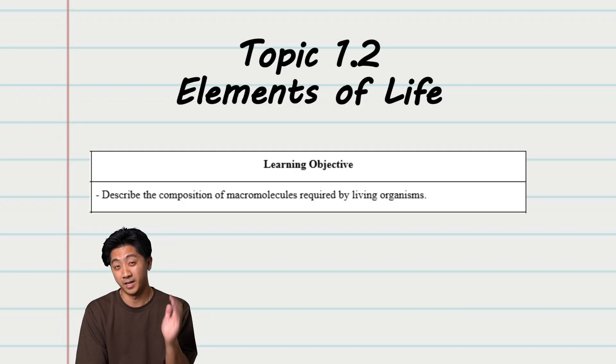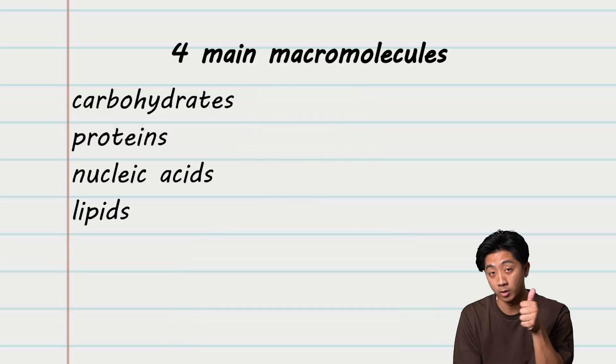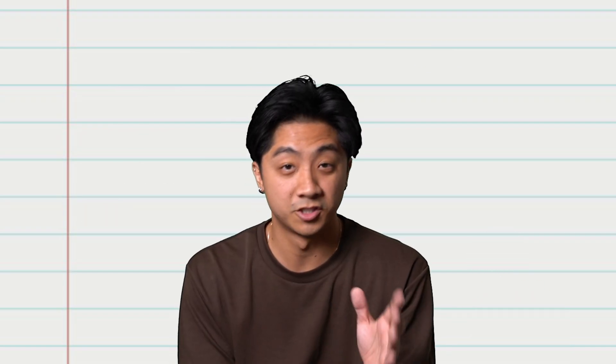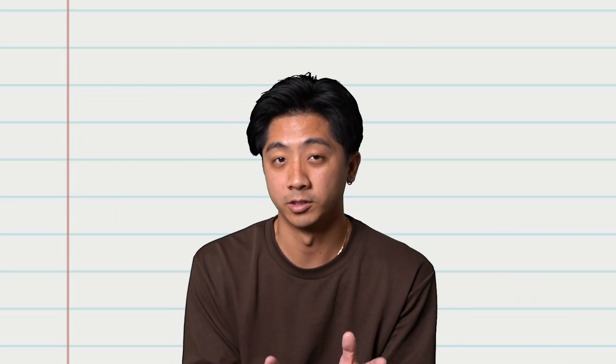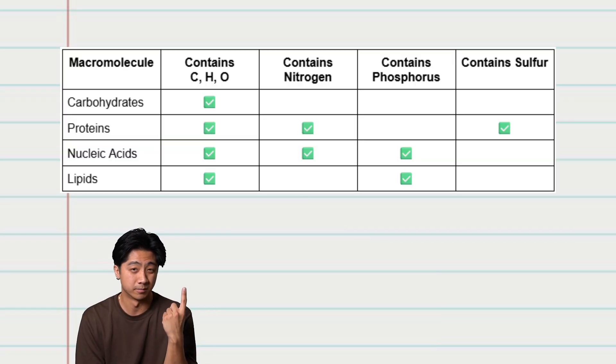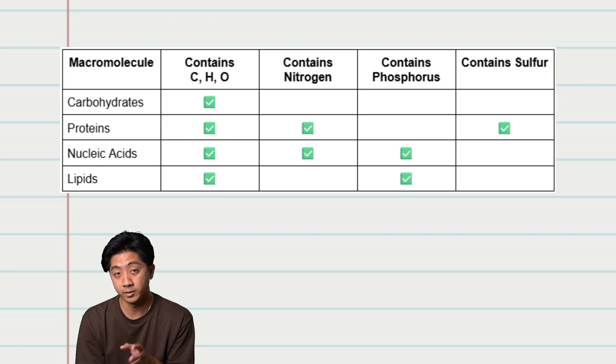Topic 1.2, elements of life. There are four main macromolecules that you need to know: carbohydrates, proteins, nucleic acids, and lipids. The rest of unit 1 is just understanding these four macromolecules. And for topic 1.2, you basically just need to know this chart. Carbon, hydrogen, and oxygen are found in all four of the main macromolecules. But there are other elements that are specific to each one.